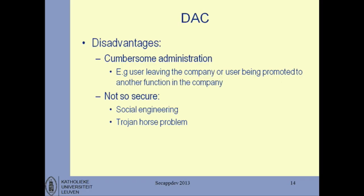This is a simple model specified with security automata. It's a very common model and you see elements of it coming back in application-level policies. But there are known disadvantages. Administration can become very cumbersome because every user is effectively an administrator for their own objects. Also, the fact that everyone can do everything to their own objects is not necessarily very secure — it's vulnerable to social engineering. And if combined with potentially malicious software like a Trojan horse, in a DAC system the Trojan can also set world access to all your files. We'll come back to how to deal with that in the second part.